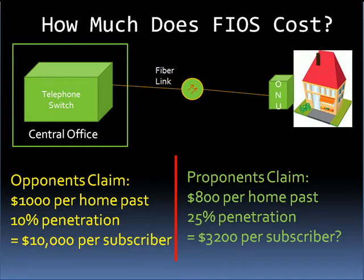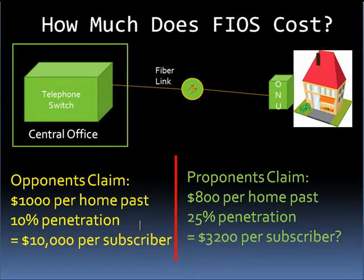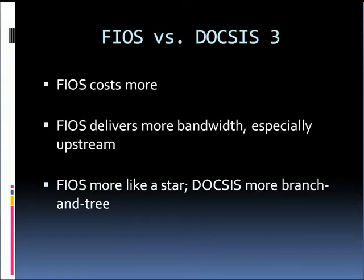So how much does FIOS cost? Proponents of FIOS claim costs of around $3,200 per subscriber and heading lower each year. They claim costs of $800 per home pass mixed with 25% penetration, meaning one in four homes taking the service, yielding a cost per subscriber of around $3,200. Opponents claim, however, that the actual costs are closer to $1,000 per home pass and that penetration is likely to only be around 10%, thus resulting in a cost per subscriber of a whopping $10,000. In comparison, AT&T's U-Verse system costs only a fraction, well under $1,000 per subscriber, because a key portion of the network, including the terminal that terminates curbside, is shared among multiple homes.